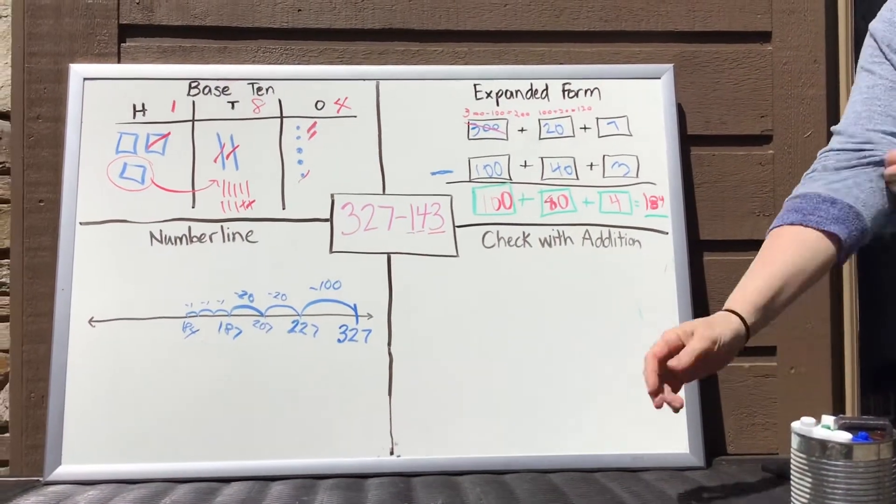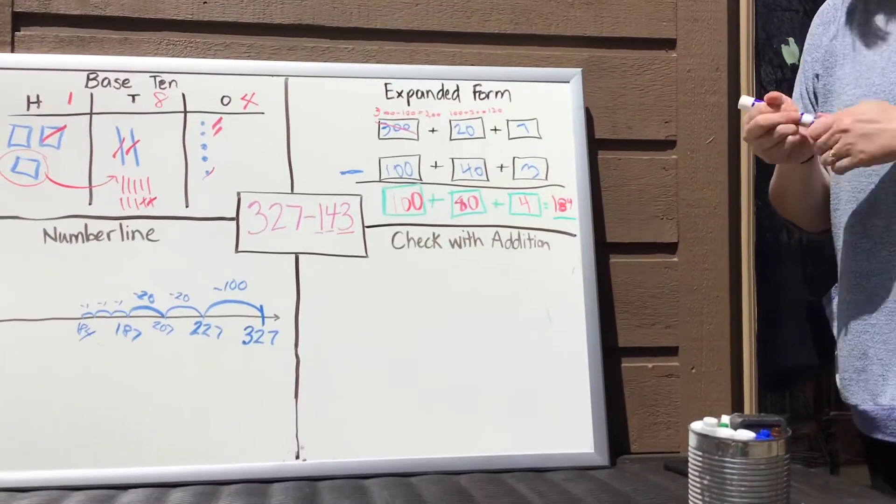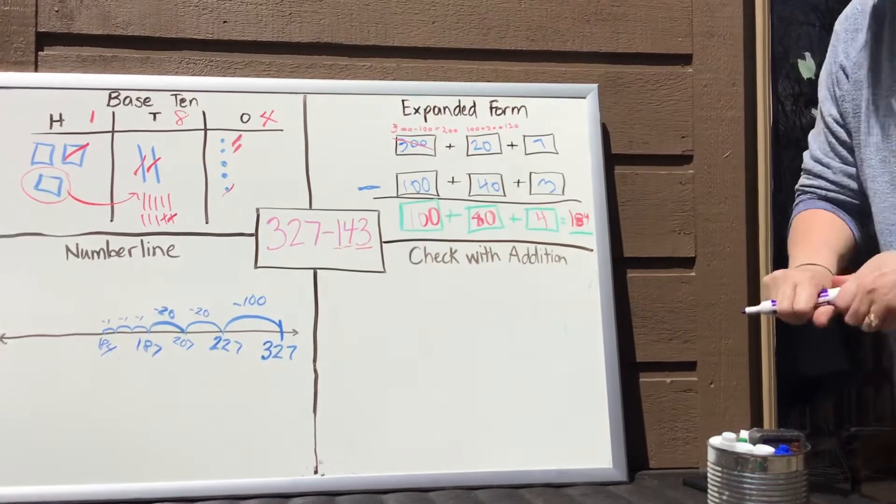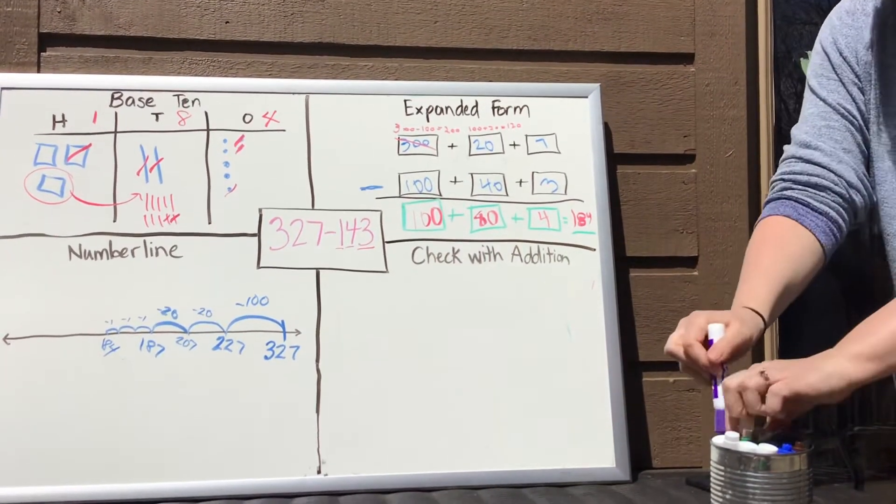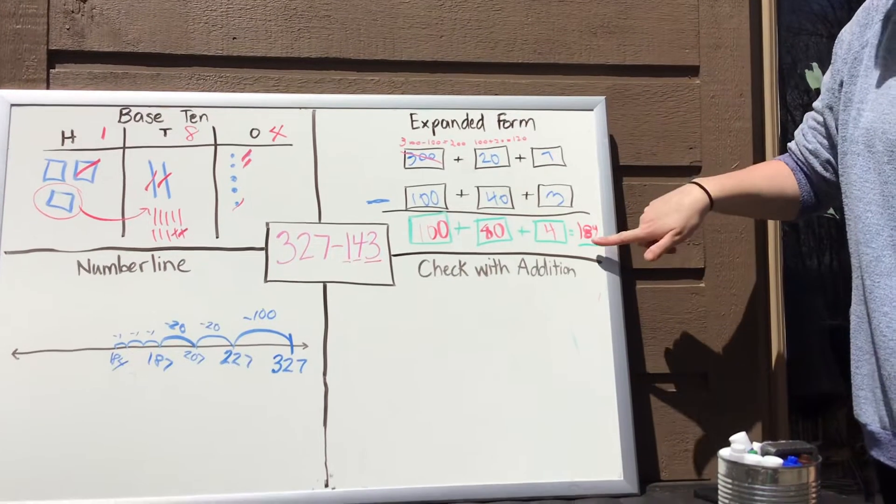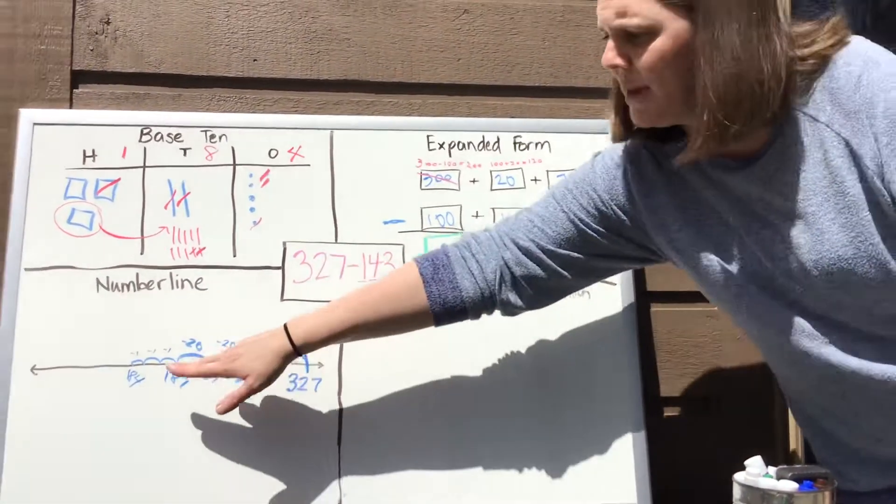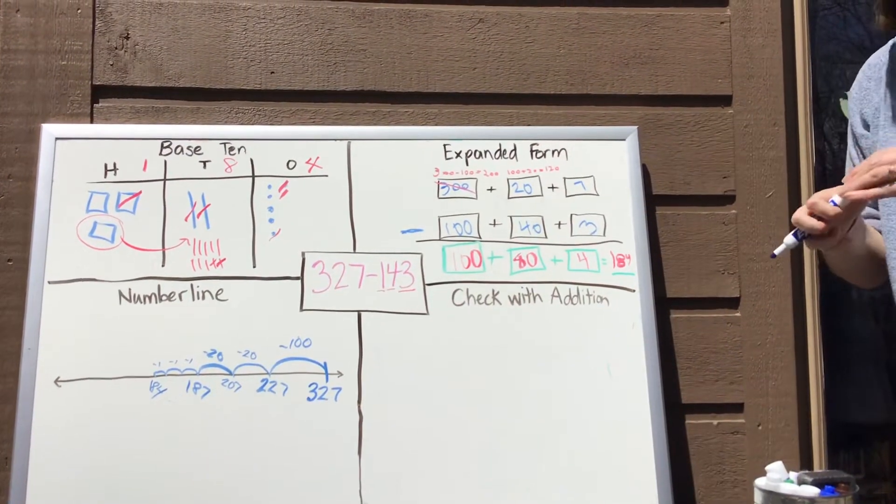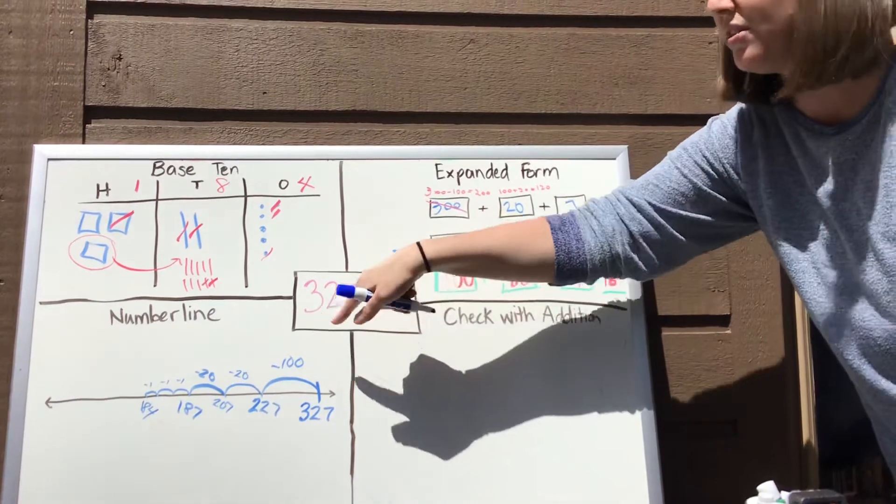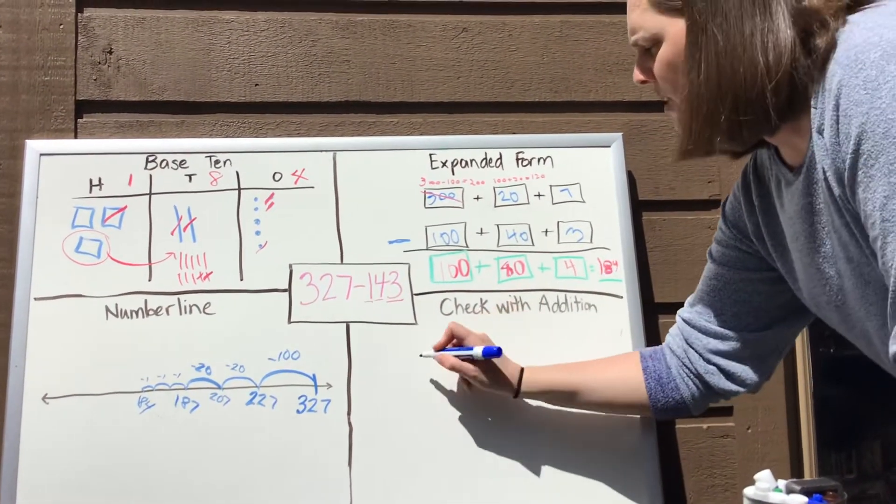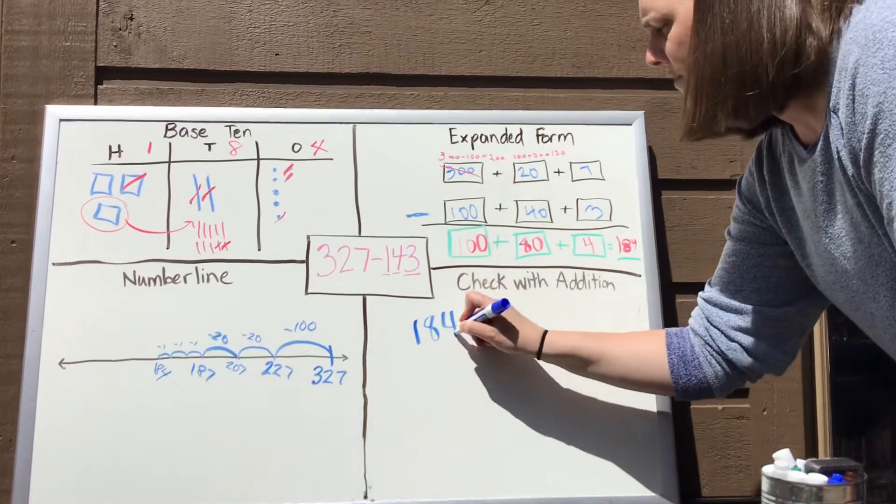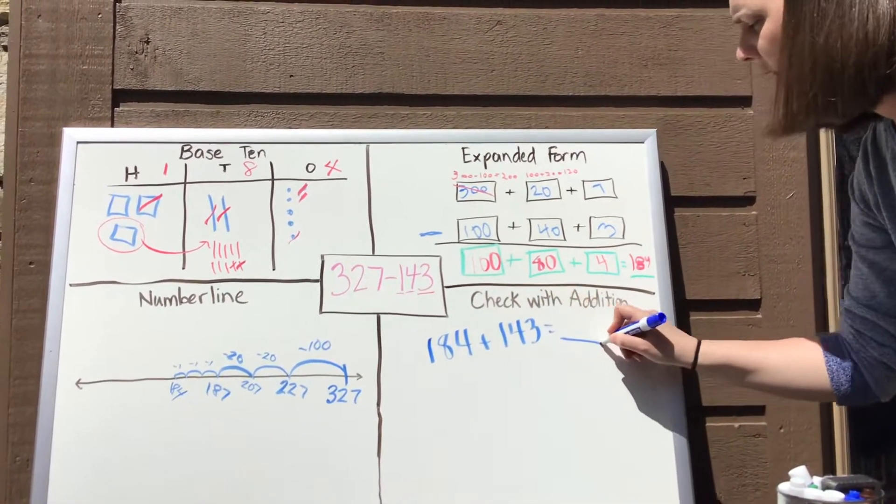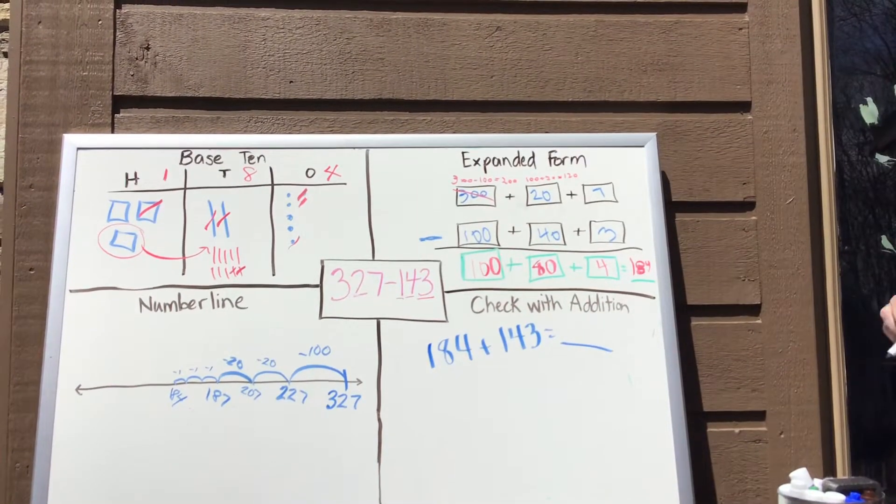But I can't be sure that I've done all of that correctly. So now I'm going to go and I'm going to check my work with addition. And remember when we're checking our work with addition, we want our answer to be 327 because that's our whole. So we're going to take the answer that we came up with, 184, and we're going to add it to the 143. And if we do that and we get it correct, we should come up with 327. So I'm going to say 184 plus 143 equals, and I should get 327 if I do it correctly.